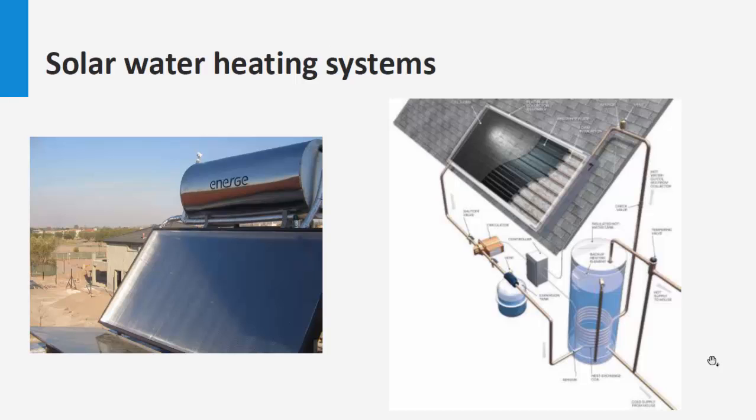The collector absorbs solar radiation and converts it into heat. The heat is then absorbed by a heat transfer fluid that passes through the collector. Thus heat can be stored or used directly.